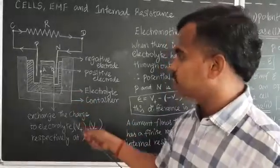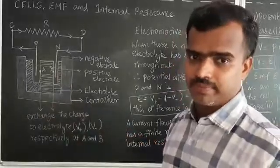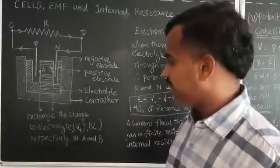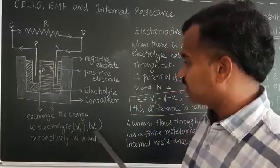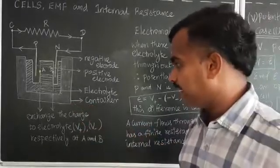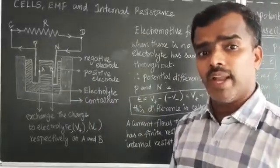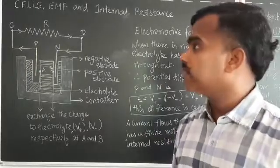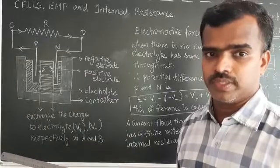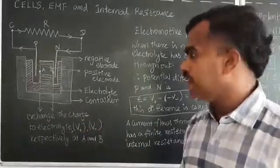The positive electrode exchanges charges to the electrolyte at point A, and similarly the negative electrode exchanges charges to the electrolyte at point B. The potential difference at the positive electrode is named V-plus, and the potential difference at the negative electrode is named V-minus. Now, if the resistance R is very large — assume R is infinity — no current will flow through the cell. That is why we say electromotive force: when there is no current passing through the electrolyte cell, we call that EMF.